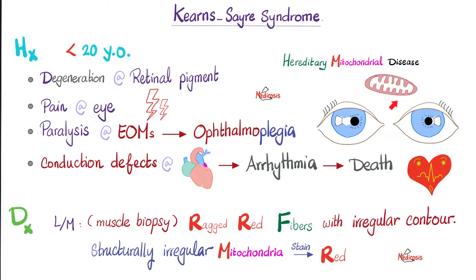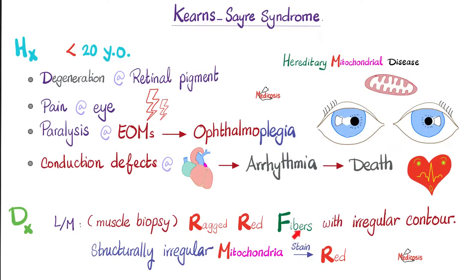When the mitochondria suffer, the most active organs suffer the most, such as the eyes, the retina, and the heart. Cardiac conduction defects and arrhythmias occur, some of which are fatal. On light microscopy, muscle biopsy shows ragged red fibers, as in MERRF syndrome which we discussed before. These ragged fibers are irregular — the mitochondria are also irregular and they stain red, which is why they're called ragged red fibers.